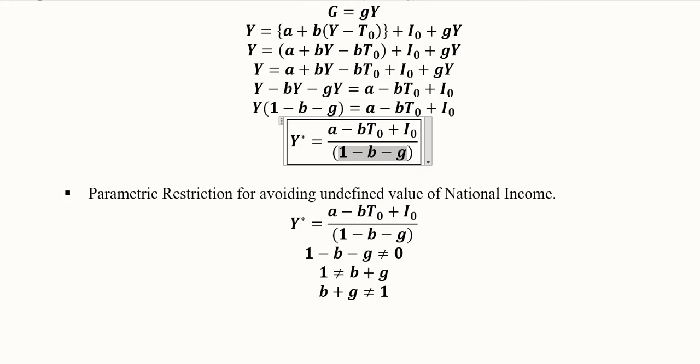So there should be some parametric restrictions for it as well. And because if this turns 0, the answers will become undefined. And undefined value of Y status will not be economically meaningful. So this should not be equal to 0, the denominator. That's what we have written here. And if we shift B and G to the other side, it becomes that 1 is not equal to B plus G. In other words, what we want to say is that the sum of B and G is not equal to 1. Because if it is equal to 1, this term will become equal to 0. And this would imply that this will become undefined.